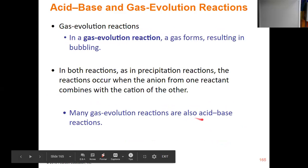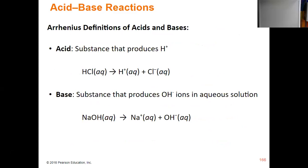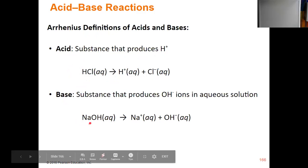In some cases with weak acids and weak bases, one of the products might be a weak electrolyte. For gas evolution reactions, which are often acid-base reactions, we end up having a gas form, and we'd see that as physical bubbling in our product. We're going to look closer at acid-base reactions using the Arrhenius definition. An Arrhenius acid is anything that produces H+ ions — for example, HCl dissociates to produce H+ and Cl−. An Arrhenius base is any substance that produces OH− ions in aqueous solution, such as NaOH, which dissociates to form Na+ and OH−.